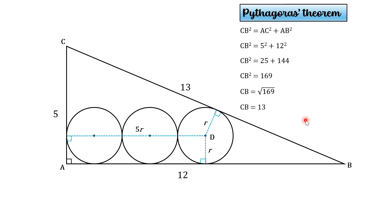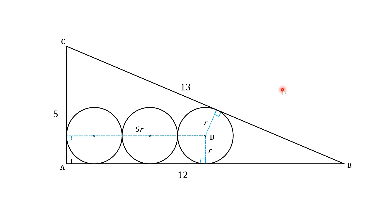Next we need to find out the area of triangle ABC. To do this, because we already have the base and the height, we can use the formula half base times height, where the base is 12 and the height is 5. 12 times 5 is 60. 60 times a half is 30, so the area of the triangle is 30 units squared.